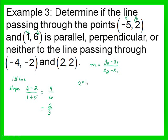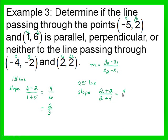For the second line, to find its slope: negative 4 is x sub 1, negative 2 is y sub 1, 2 is x sub 2, and 2 is y sub 2. Plugging into the slope formula: y sub 2 which is 2, minus negative 2, which becomes plus 2, over 2 minus negative 4, which becomes plus 4. So 2 plus 2 is 4, and 2 plus 4 is 6 — reduce this fraction to 2 thirds. Comparing the slopes: the first line has a slope of 2 thirds and the second line has a slope of 2 thirds, so these two lines are parallel.